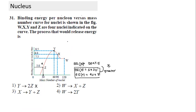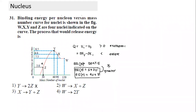We can calculate the Q value for each process. Q value equals initial mass energy minus final mass energy, or equivalently, final binding energy minus initial binding energy. Q value greater than zero indicates positive energy release, which is exothermic. If Q is negative, the reaction is endothermic — meaning energy must be supplied rather than being released. For all four cases you can calculate Q values, and whichever comes positive means energy will be released.